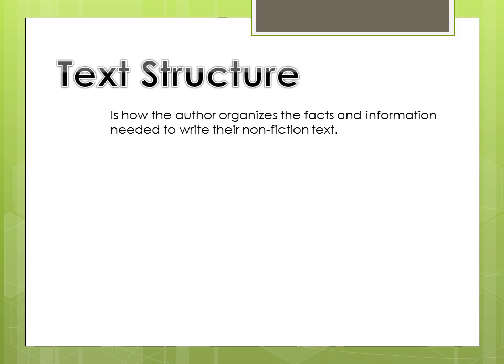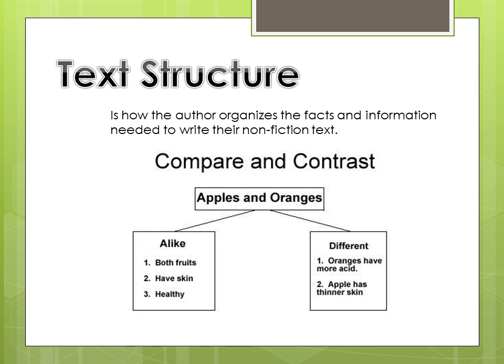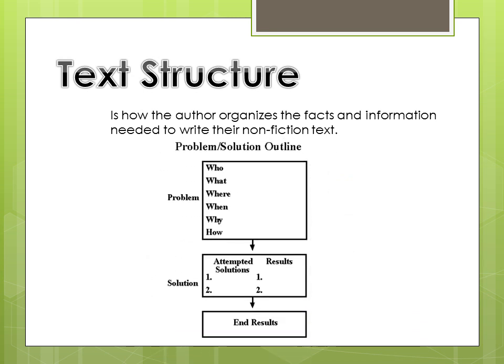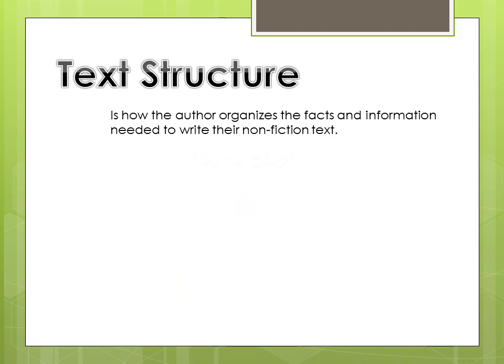Text structure is how the author organizes the facts and information needed to write their non-fiction text. There are five common ways to organize your information. They are cause and effect, compare and contrast, problem-solution outline, description, and finally there is chronological order.